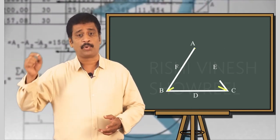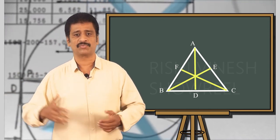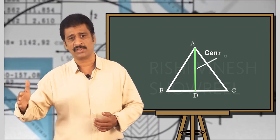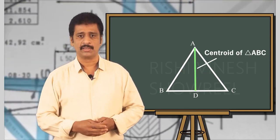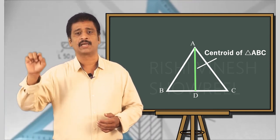So, the point of intersection of the medians of the triangle ABC is called the centroid of the triangle ABC. And the centroid is represented by the letter capital G.